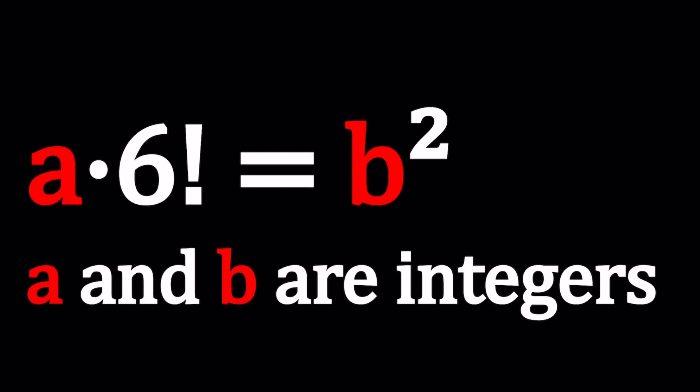Hello everyone. In this video, we're going to be solving a nice number theory problem. We have a times 6 factorial equals b squared, where a and b are integers, and we're going to be solving for the a and b values.